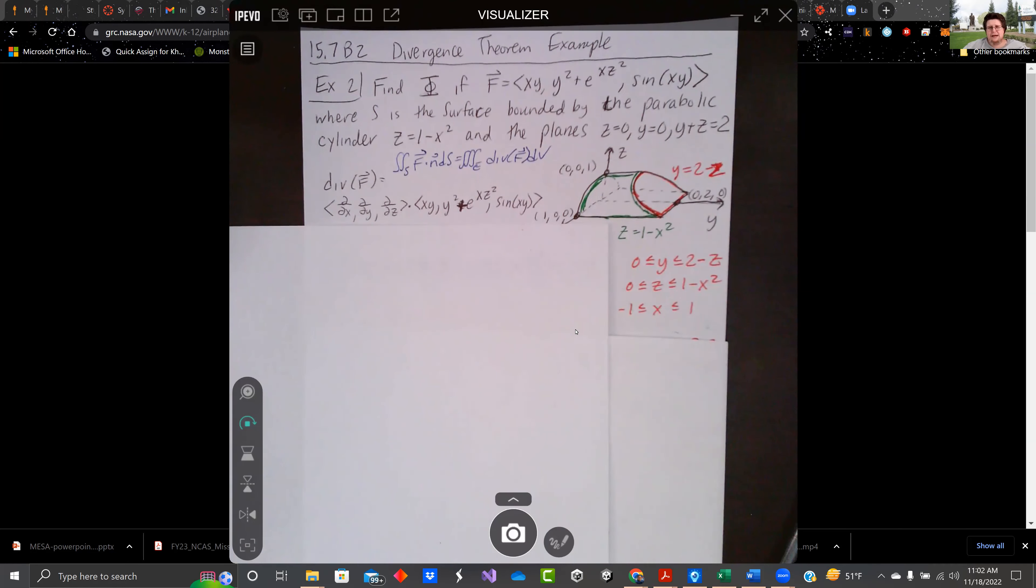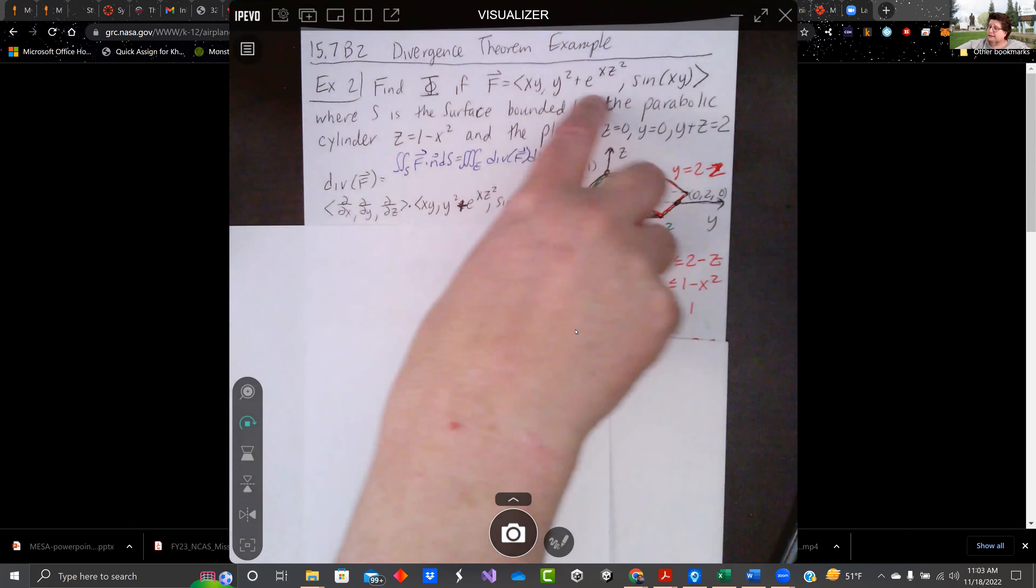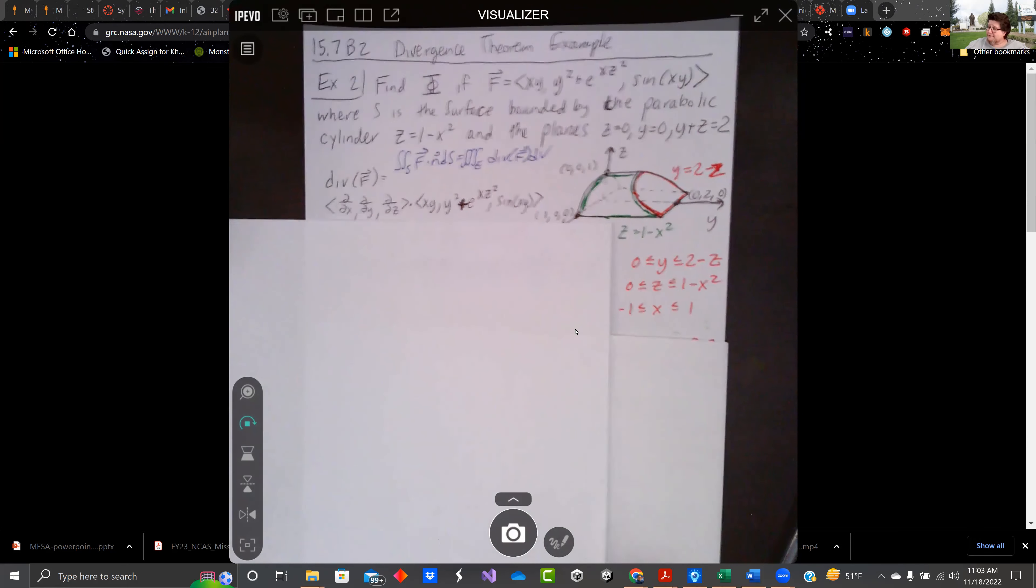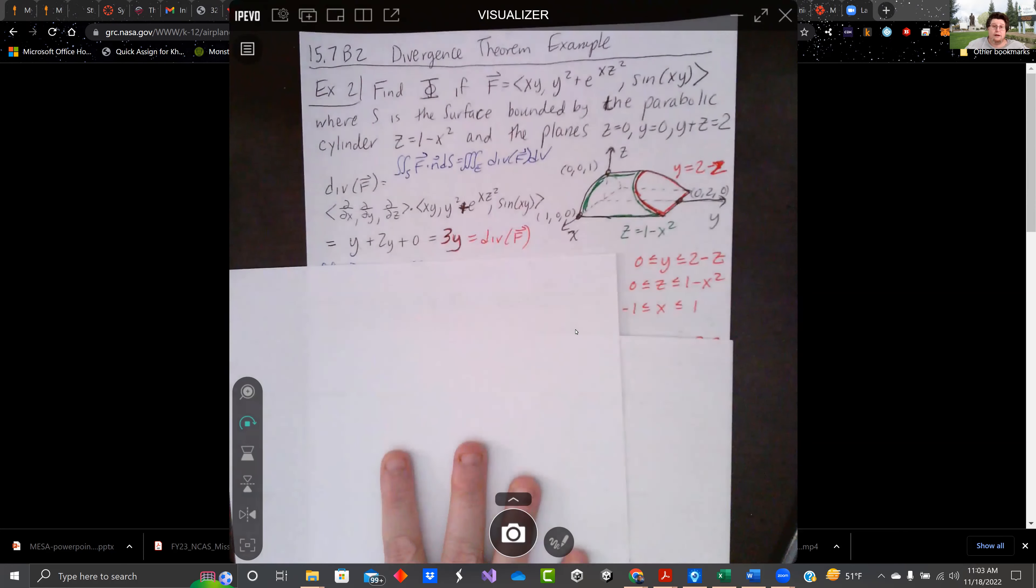Now, that looks like a lot of surfaces to do. We don't want to do that. We want to use the divergence theorem. So let's take the divergence of f. This is going to be really ugly to do for each surface. So we do the divergence of f, and we just get 3y.